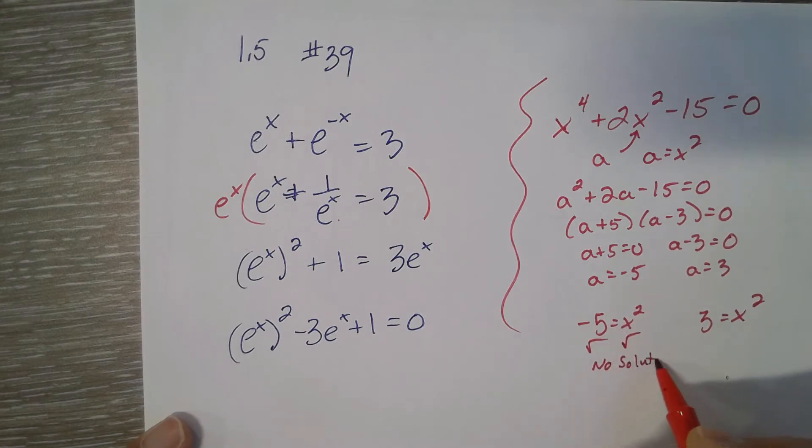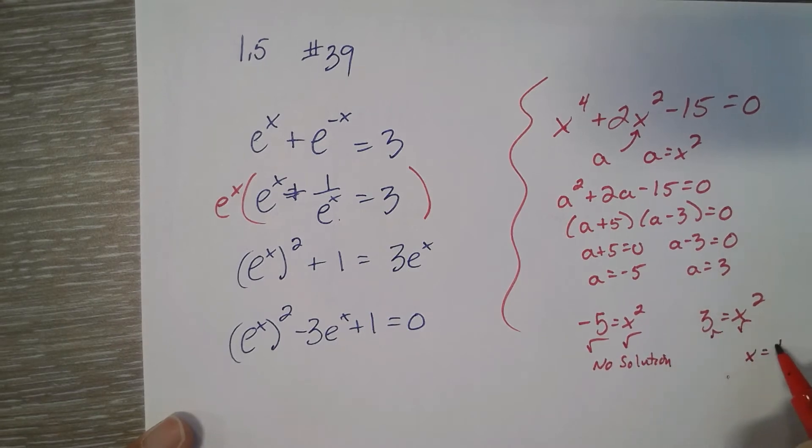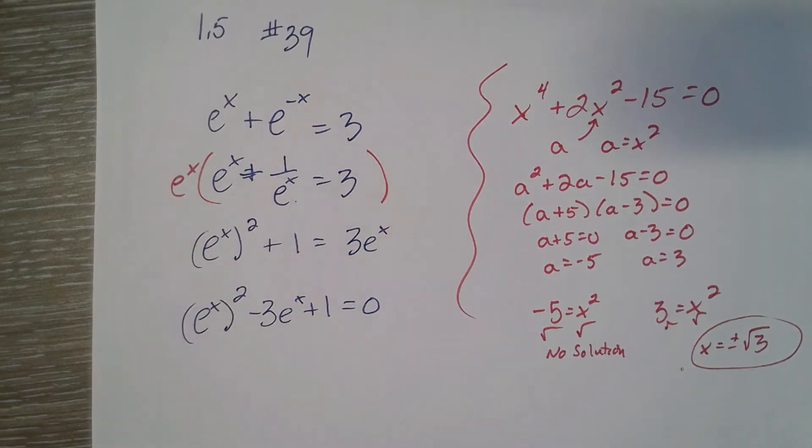And that would be no solution. Can't square something and get a negative. Square root each side. So x would be plus or minus the square root of 3. Those are your two answers. That's an example of the quadratic type.